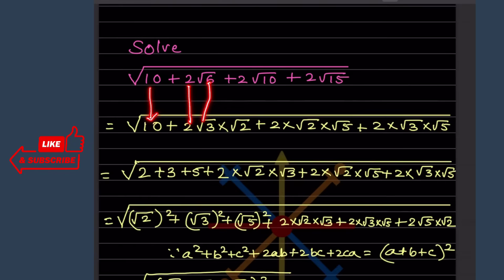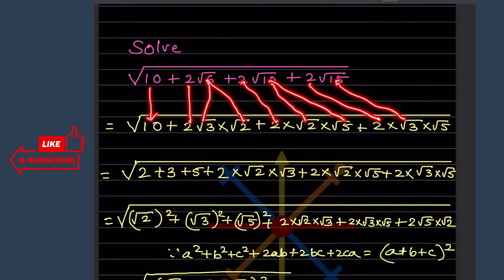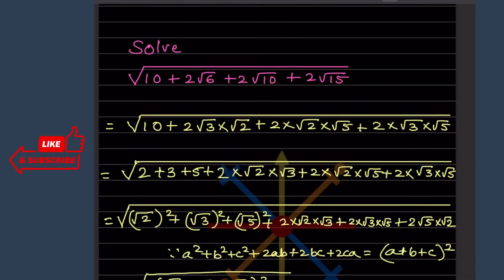√6 we write as √3 × √2. For √10 we can write √2 × √5. For √15 we can write √3 × √5. So this 10 again we can write as 2 + 3 + 5.